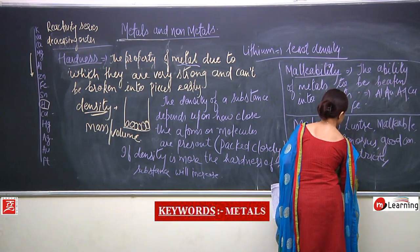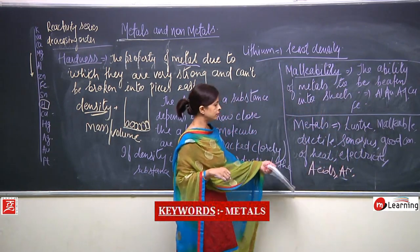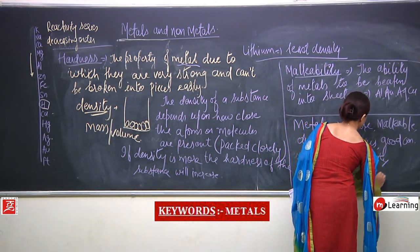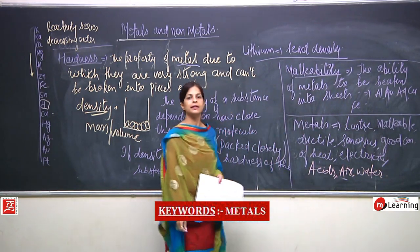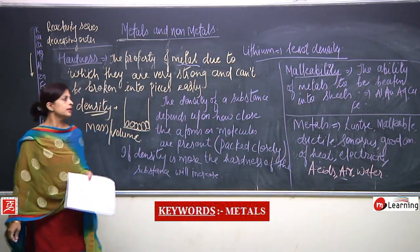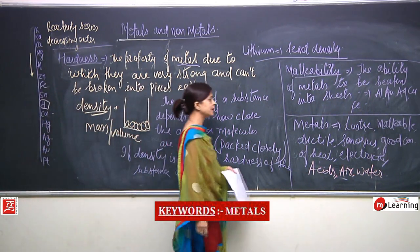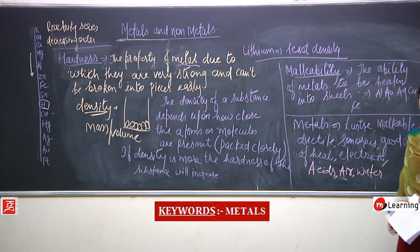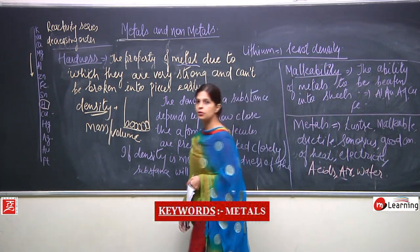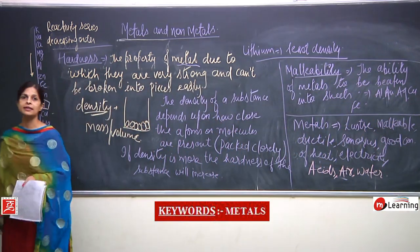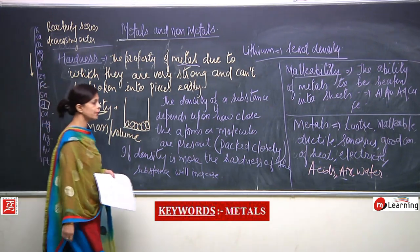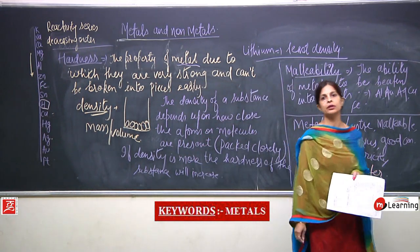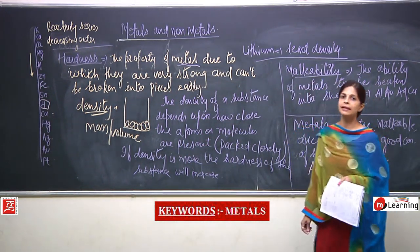Metals also react with water and air. So when you have to write about metals, the properties include: they are lustrous, malleable, ductile, sonorous, good conductors of electricity, good conductors of heat, and they react with acids, air, and water.